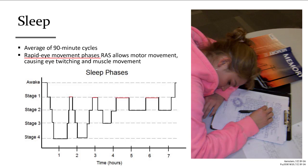During sleep, people go through approximately 90-minute cycles of sequential stages, each lasting 5 to 20 minutes. The last phase is the rapid eye movement stage, where people experience vivid dreams and exhibit eye twitching or other muscle movements. During this phase, the reticular activating system is less inhibitory and allows motor impulses to exit the brain.